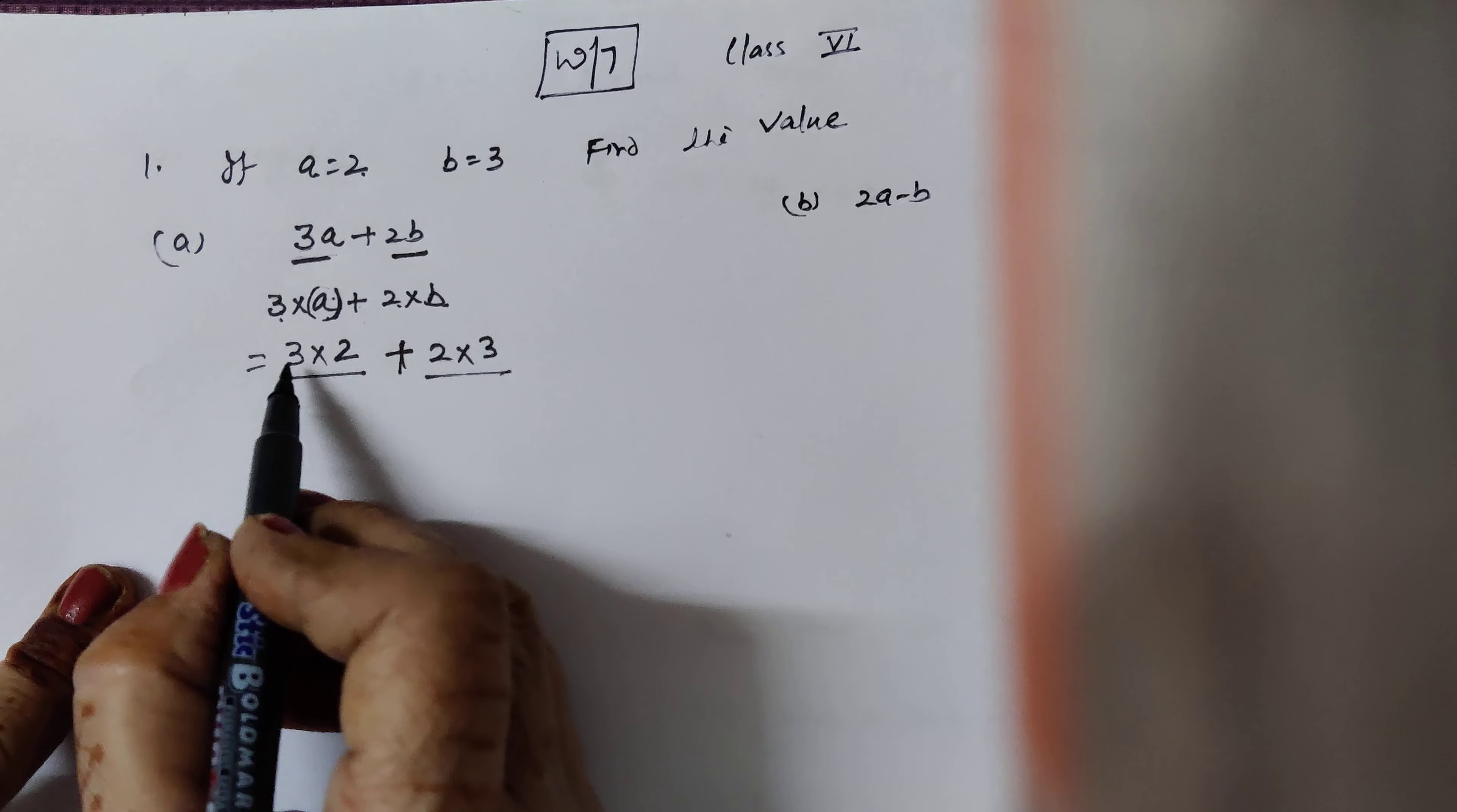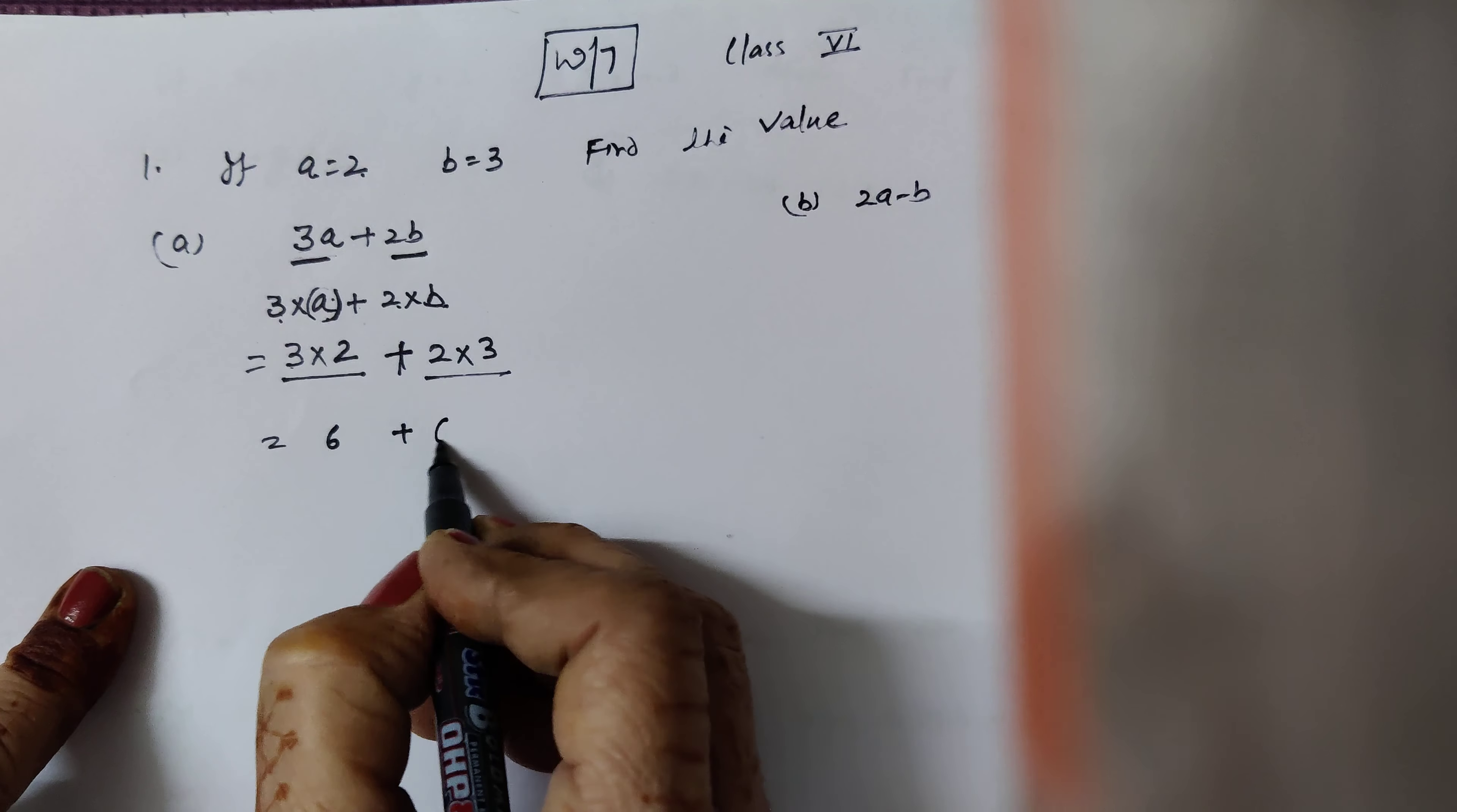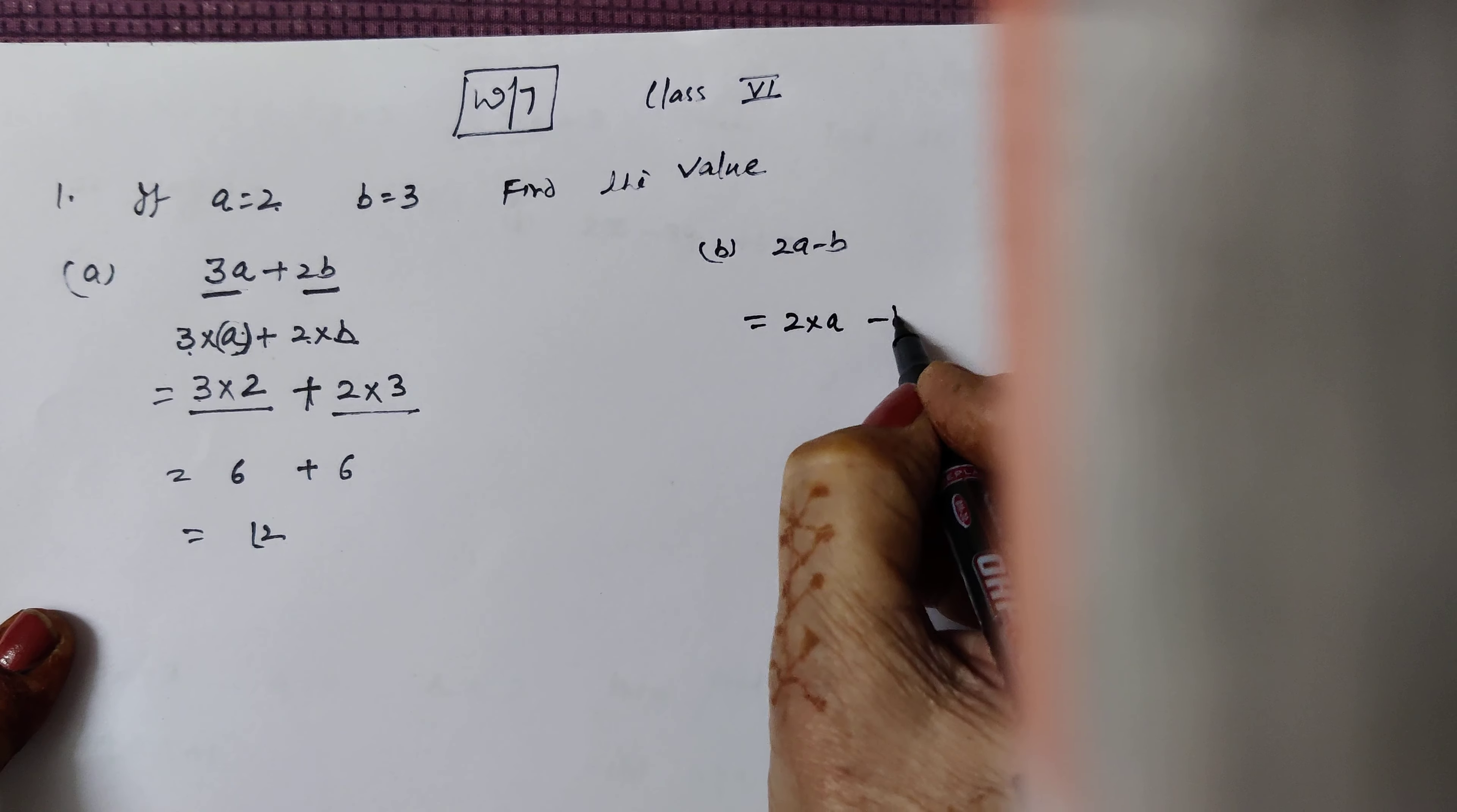Now simple number, now you have multiplication, either multiplication or BODMAS according to you, we will multiply. 3 times 2 is 6, plus 6, answer is 12. So this is the value, 12 is the value of the algebraic expression.